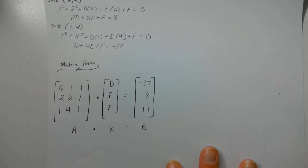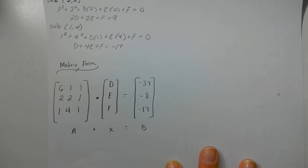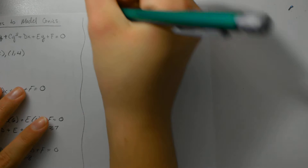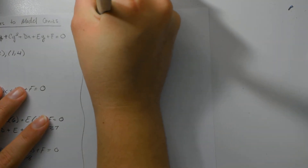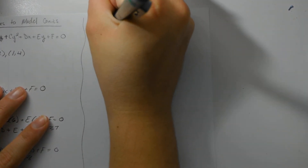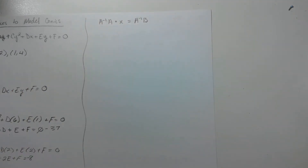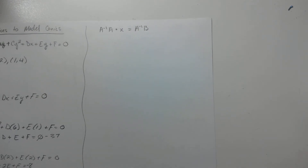The next step is finding the inverse. I did previously cover how to find the inverse by hand, but I'm going to show you how to do it in the calculator. The equation becomes: the inverse of A times A times X equals the inverse of A times your B value. The A and A-inverse cancel, so you're really solving for X, which is what we're focused on.